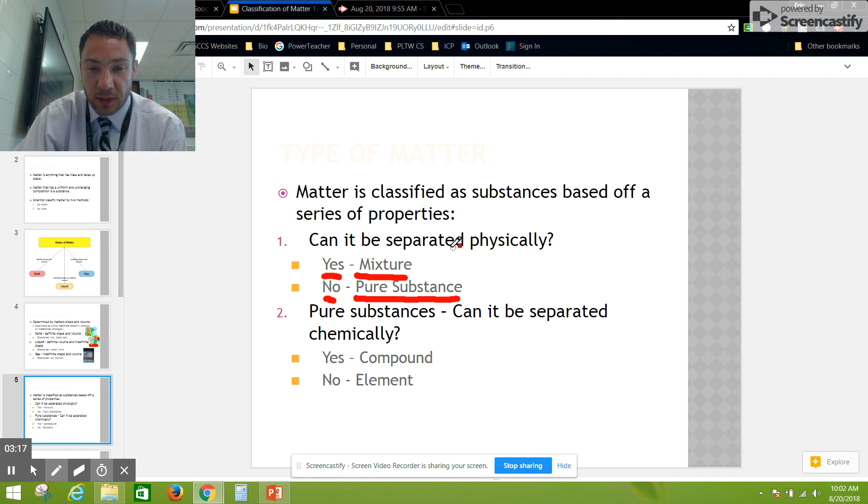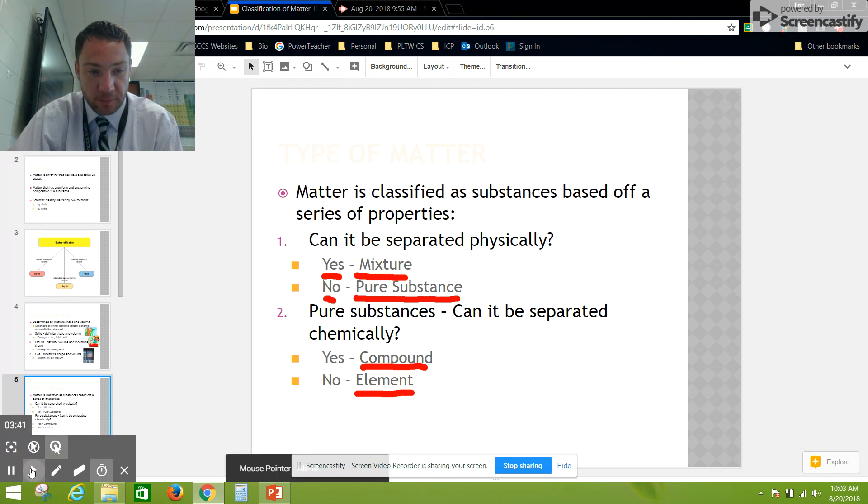We can then separate pure substances into two categories based off of: can they be separated chemically? If they can be separated chemically, we say that they're a compound. If not, then they're an element.